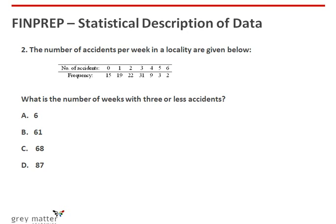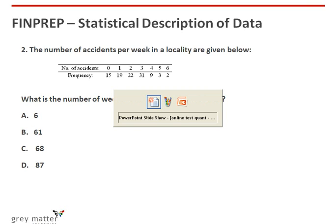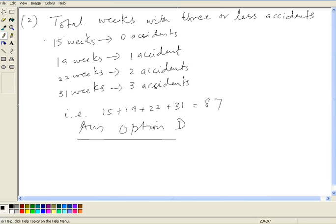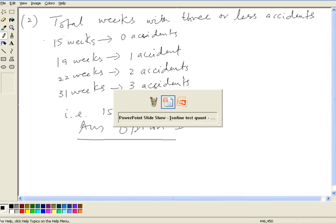Second problem: the number of accidents per week in a locality are given. What is required is the number of weeks with 3 or less accidents. Total weeks with 3 or less accidents: 15 weeks with 0 accidents, 19 weeks with 1 accident, 22 weeks with 2 accidents, 31 weeks with 3 accidents. Adding these up results in 87. So the option is D, which is 87.